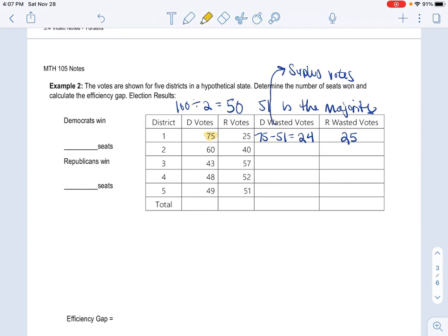Now, if you look in District 2, the Democrat won again, right? Because it got the majority. But again, it only needed the 51, so nine were wasted. And the Republican, all of them were wasted since it didn't go towards the candidate.